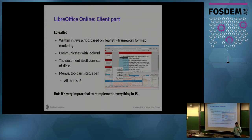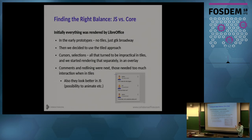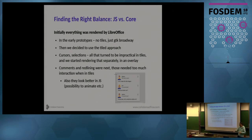The document itself is not the only thing - there's also the toolbar, menu bar, status bar, and other things in JavaScript. But it's very impractical to implement everything in JavaScript, so we had to find the right balance. In early prototypes there were no tiles - basically nothing in JavaScript. The entire UI was in the browser, but for every action you wanted to do, you'd have to render it on the server, which is very impractical.